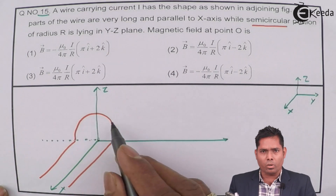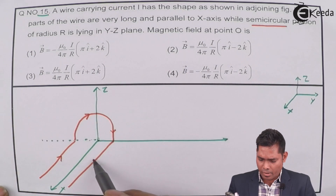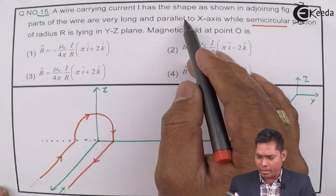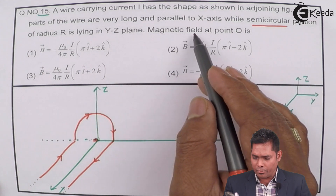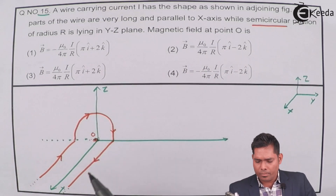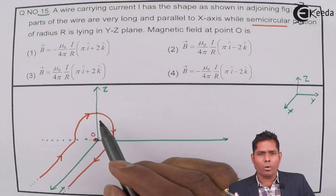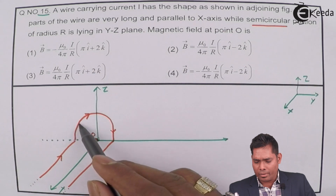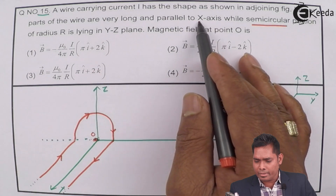This distance is the same on both sides, though not drawn perfectly. Suppose the current is moving like this along the wire. This is an infinitely long wire. The linear portions are parallel to the X axis — very, very long. This is the center, point O, and you have to find the magnetic field at this point. This distance is the same — it is R.